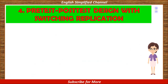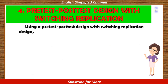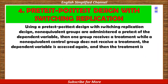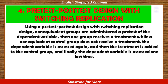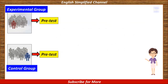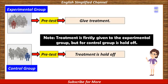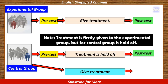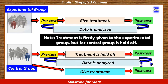Number 4. Pre-test post-test design with switching replication. Non-equivalent groups are administered a pre-test of the dependent variable. Then one group receives a treatment, while a non-equivalent control group does not receive a treatment. The dependent variable is assessed again, and then the treatment is added to the control group. Finally, the dependent variable is assessed one last time. The first step is by addressing pre-test to the two groups. Then treatment is firstly given to the experimental group, while for the control group it is held off. After that, the two groups are post-tested. Then the treatment is given to the control group, after which the control group is again post-tested. Finally, the conclusion is made by comparing and analyzing the data.